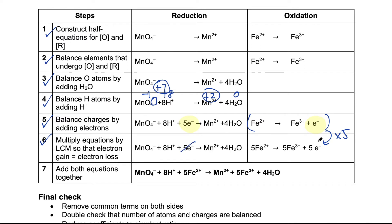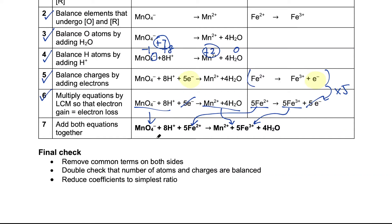Now the number of electrons are the same for both equations, so we can add up the two equations and cancel the electrons. Things on the left go on the left, things on the right go on the right, and there we have the final equation. We do a final check: verify that the number of atoms is the same on both sides, and then check that the charges are the same on both sides.